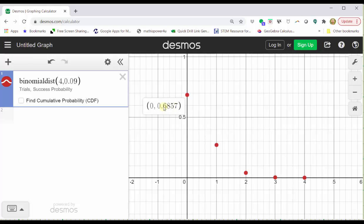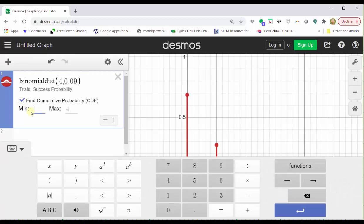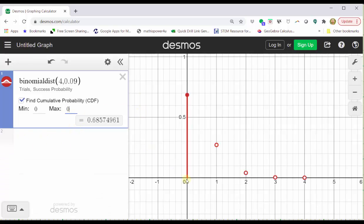Another option would be to click on the find cumulative probability box here, and then change the min and max values both to zero. If we do this and then close the desmos keypad, notice how it draws a vertical line segment at X equals zero, and also shows the probability at the bottom of cell one.